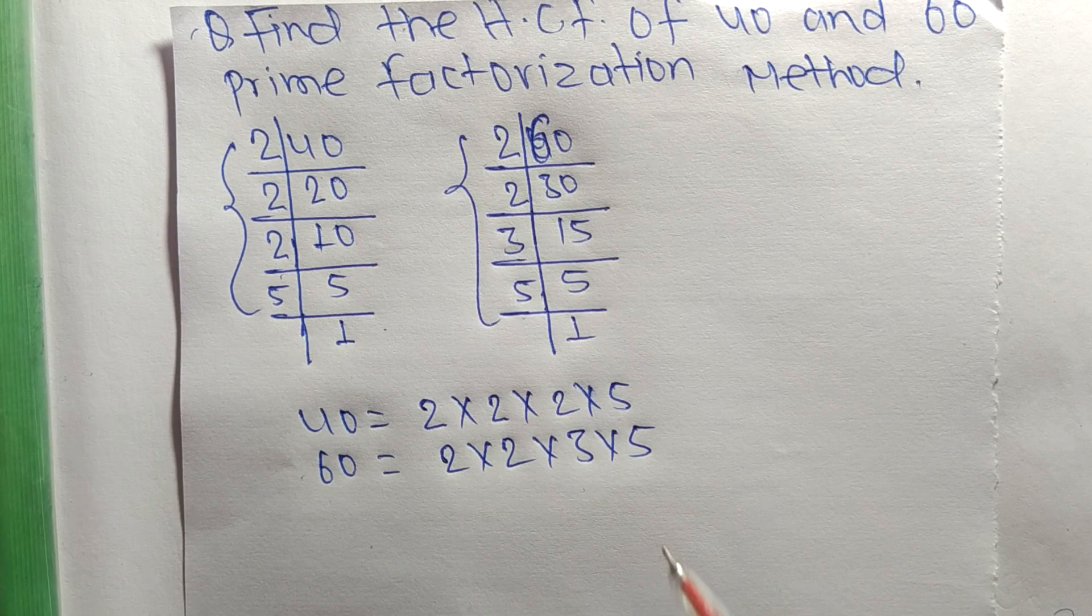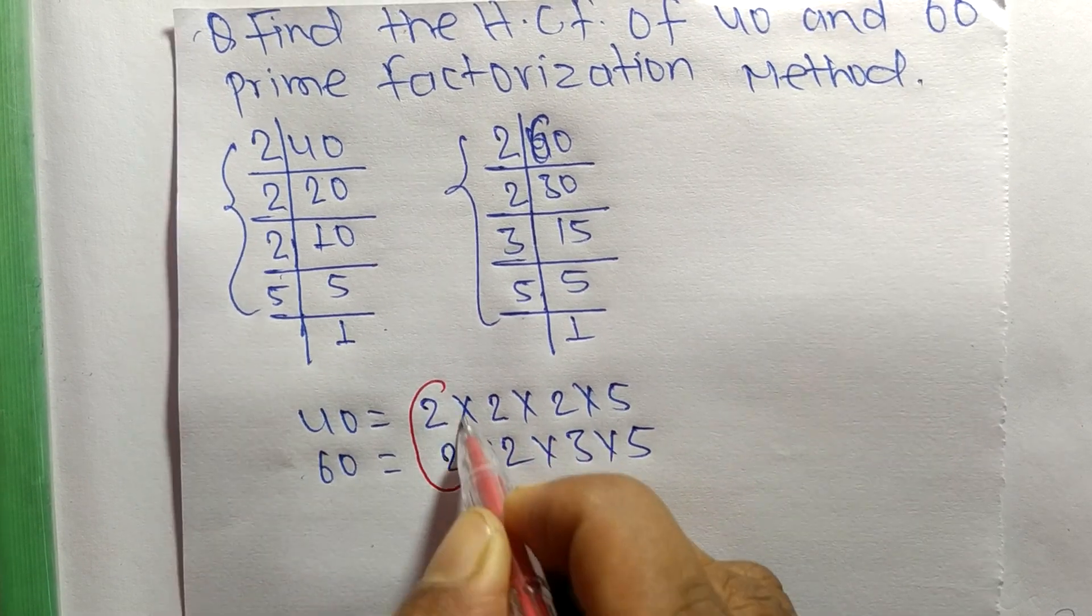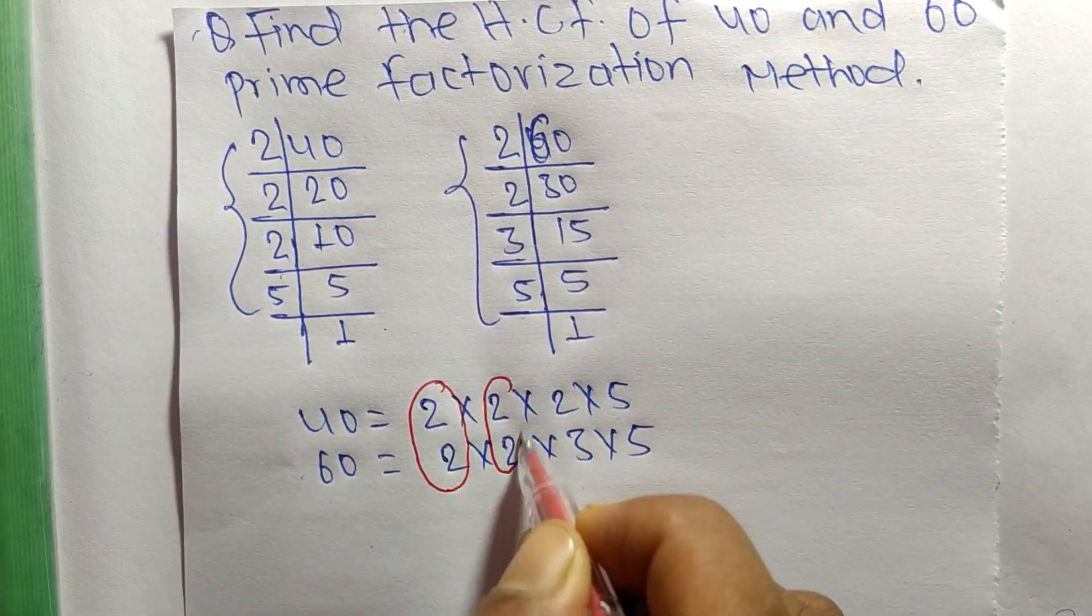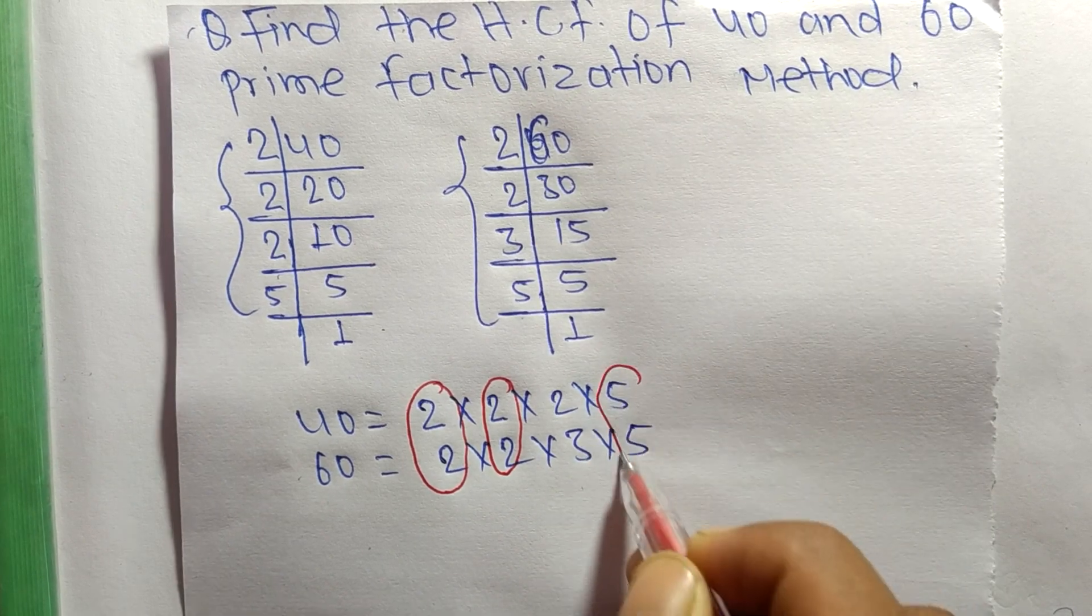Now from these prime factors, we find the common factors. The first common one is 2, the second one is also 2, and the last one is 5.